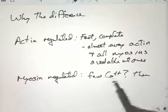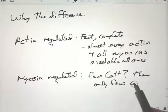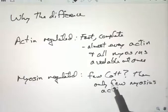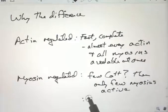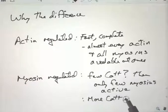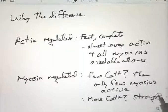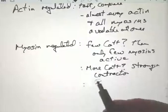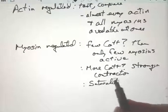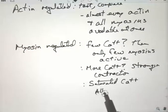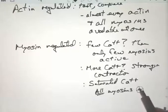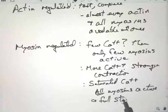Whereas with myosin-regulated muscle, it's quite different. With few calcium, you get only a few myosins activated. And so, you get a very light contraction, like picking up a very light piece of paper. With more calcium, you get stronger contraction. And if you saturate with calcium, you get every single myosin head is active. So, the strength of contraction depends upon the amount of calcium, and therefore, the amount of neurotransmitter released. And, of course, that goes back to the number of action potentials per second.